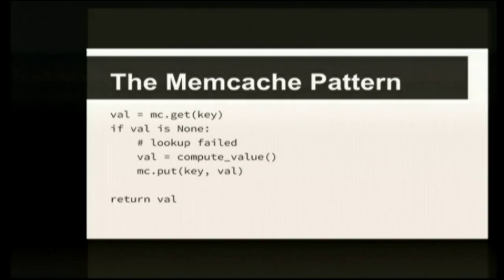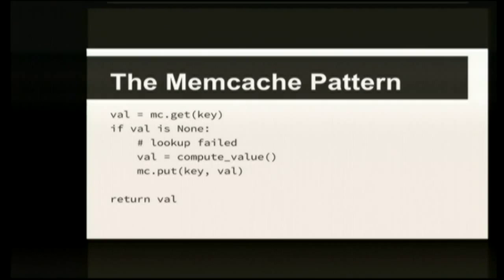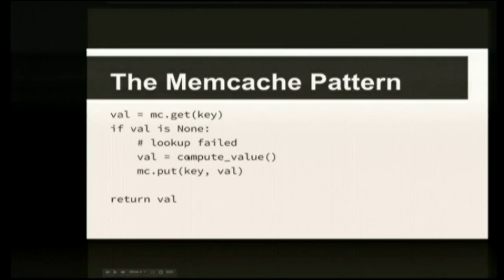The typical memcache pattern is this: you've got some computation or a query to your database that's associated with a key. For example, if you're looking at a profile page for some user on Twitter, there might be a lookup that gets their followers, but you don't want to be looking up their followers every single time, so you throw that into memcache. You attempt to get the value from memcache — that's the mc.get line. If the value's not there, you actually go and compute it, then place it into memcache and return it. So the second time you run through this loop, the value will already have been computed and exists in memcache — you'll skip the compute step and just return your saved value.